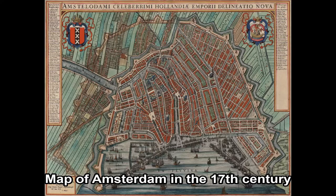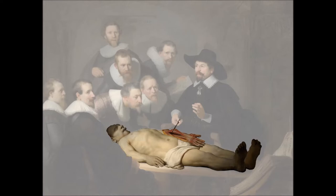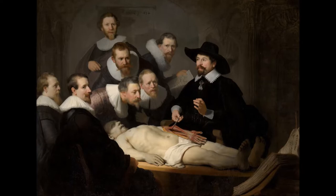Rembrandt had just moved there and was quickly making a name for himself. The body being analyzed is from a 28-year-old criminal called Aris Kind. Just like Rembrandt, Aris was born in Leiden, but whereas Rembrandt was working on a noble career, Aris Kind had become a thief.